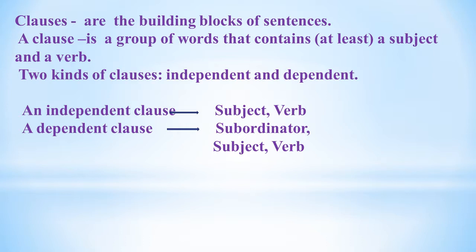A dependent clause begins with a subordinator such as when, while, if, that, or who. A dependent clause does not express a complete thought, so it is not a sentence by itself. A dependent clause is also called a sentence fragment — by itself it is an incomplete sentence, and it is an error. A dependent clause is formed with a subordinator, a subject, and a verb.